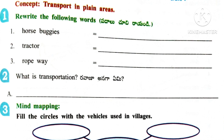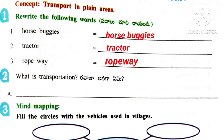Worksheet 2. Here the concept is Transport in Plain Areas. 1st activity: Rewrite the following words. 1st word: Horse Boogies. 2nd one: Tractor. 3rd one: Ropeway.